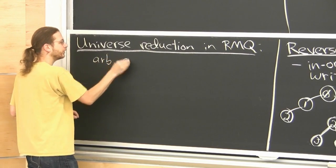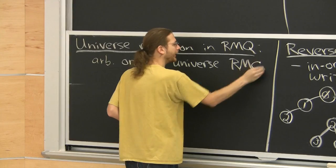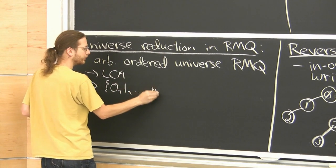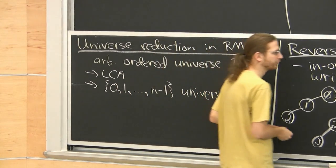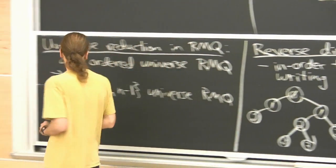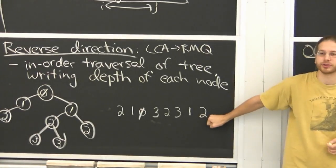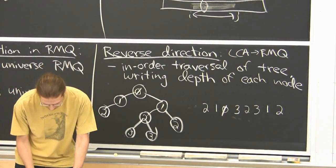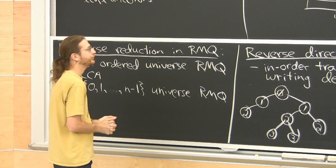These algorithms only assume a comparison model — the values just need to be from a totally ordered universe comparable in constant time. After this reduction, we can assume they are nice small integers, which lets us solve things in constant time using the word RAM without assuming that about the original values. So now it's time to actually solve something. We know RMQ and LCA are equivalent. Let's solve them both.